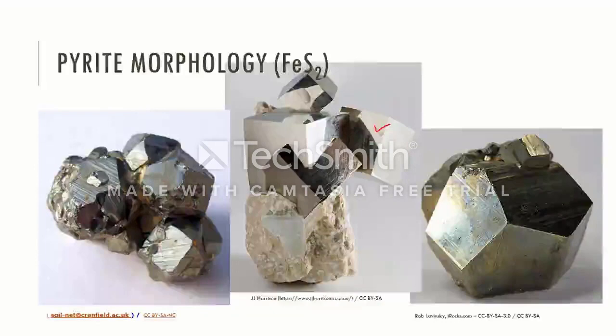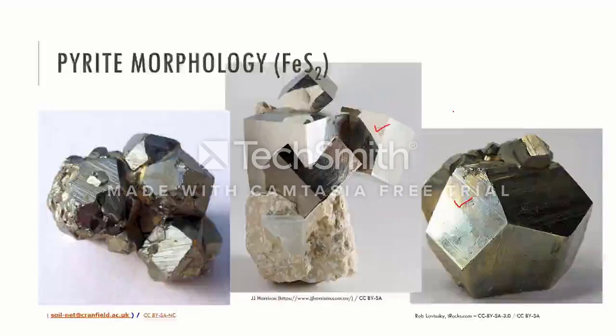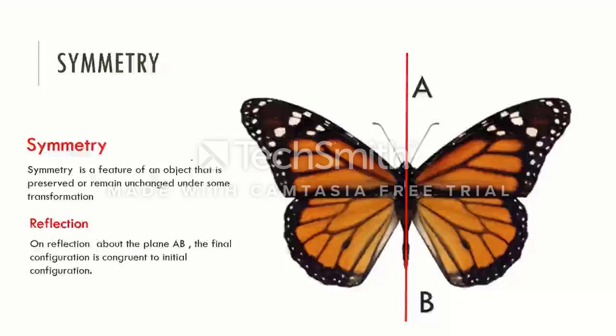Pyrite crystallizes in cubic form, but octahedral crystals of pyrite are also very common. All symmetrical objects have one thing in common, that is symmetry. Symmetry is a feature of an object that is preserved or remains unchanged under some transformation. The external shape of a crystal is the immediate consequence of the symmetry inherent in the crystal. In physics, the natural beauty of a crystal is not really the purpose for the crystal to be studied at all.